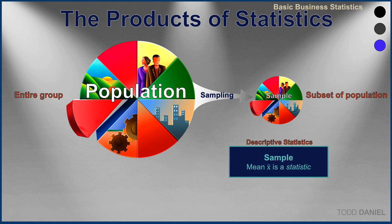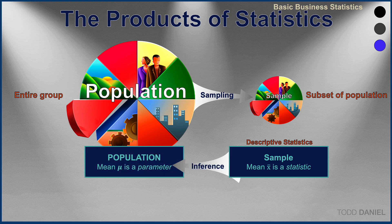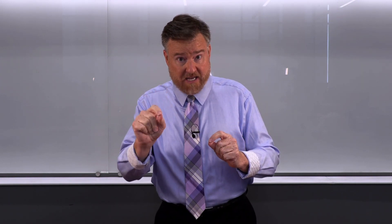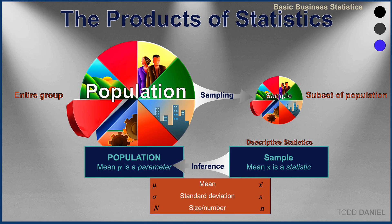We are going to calculate descriptive statistics for our sample — statistics like the mean and the standard deviation, showing the central feature and how spread out the scores are. Those descriptive statistics are written in a very specific way that differs depending on whether we're talking about a sample or a population. With a sample, you will see descriptive statistics written in English letters, such as X-bar for the mean. The mean of the population is represented by the Greek letter mu. The standard deviation will be S in the sample, but the Greek letter sigma for the population.